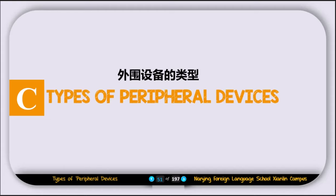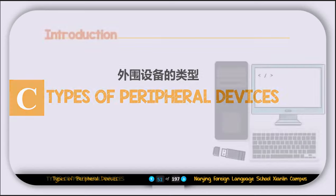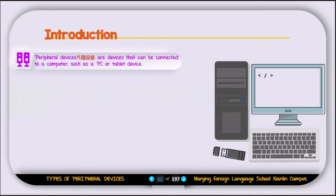This is lesson 4 and in this lesson we're going to discuss peripheral devices. Peripheral devices are the devices that can be connected to a computer such as a PC or a tablet device. All these devices are called peripheral devices.